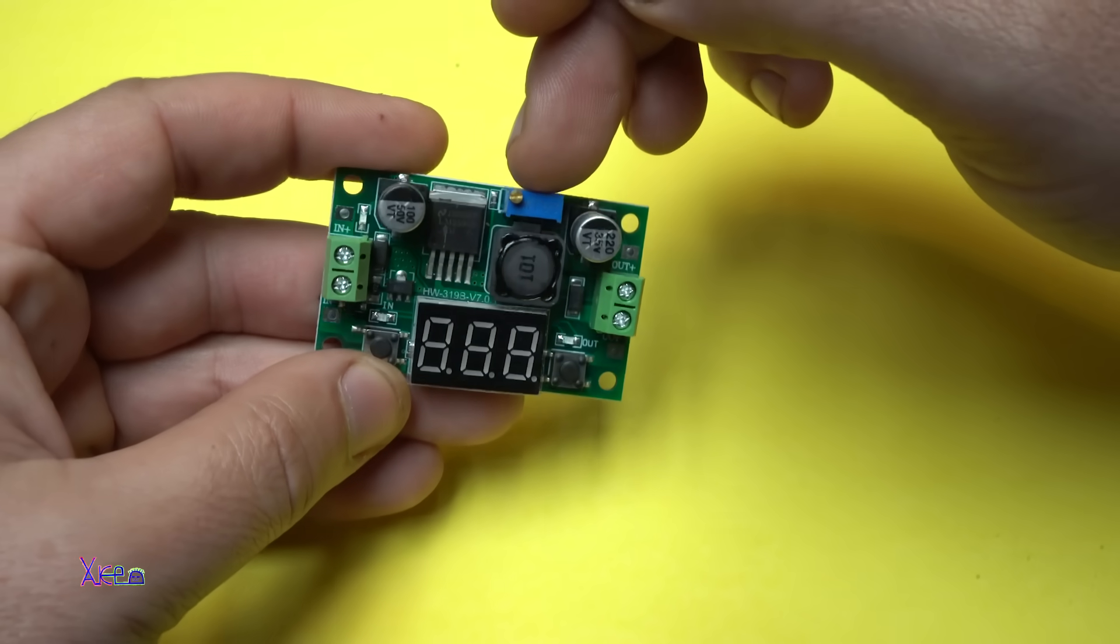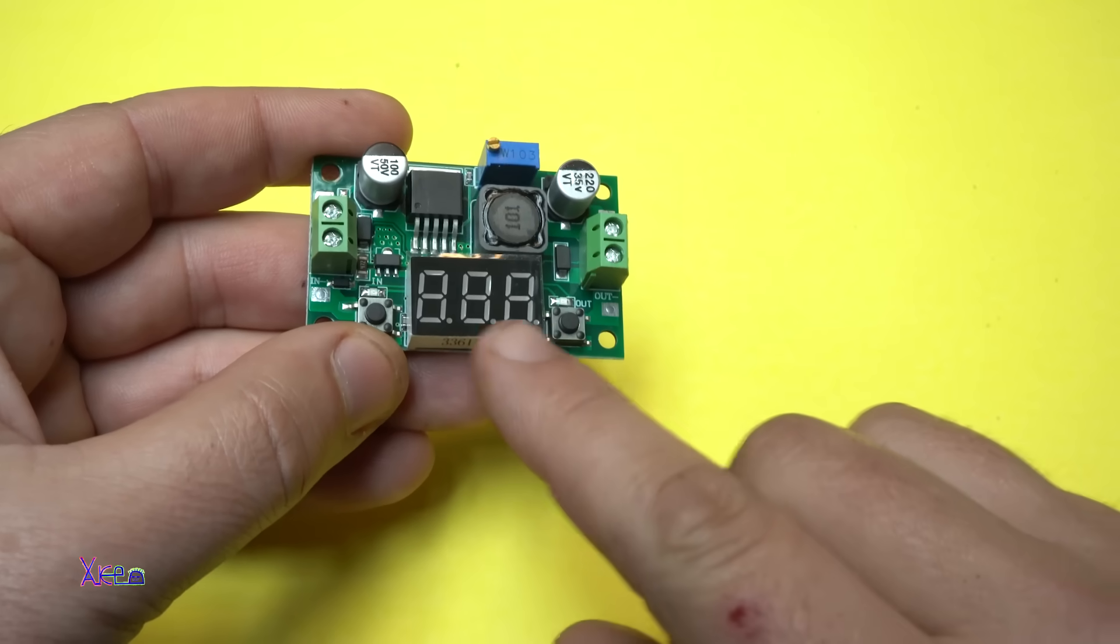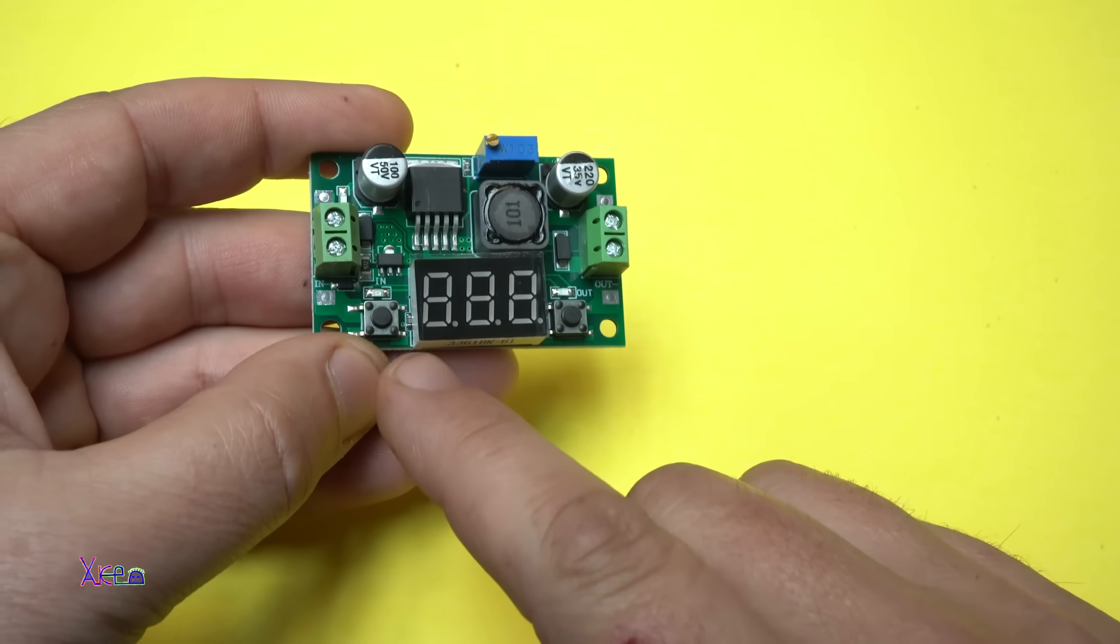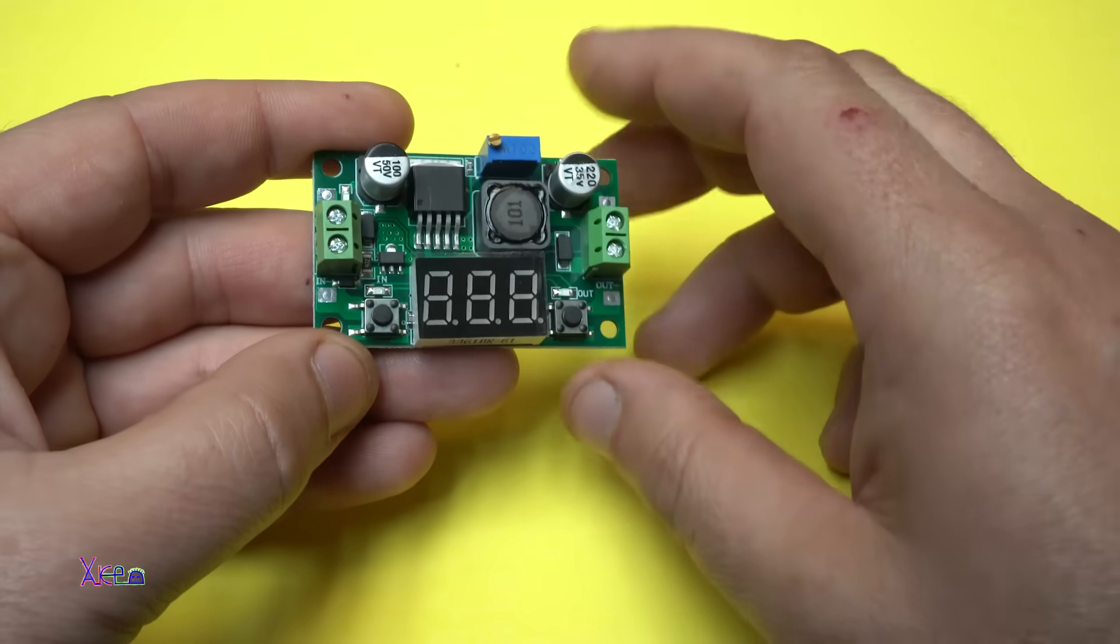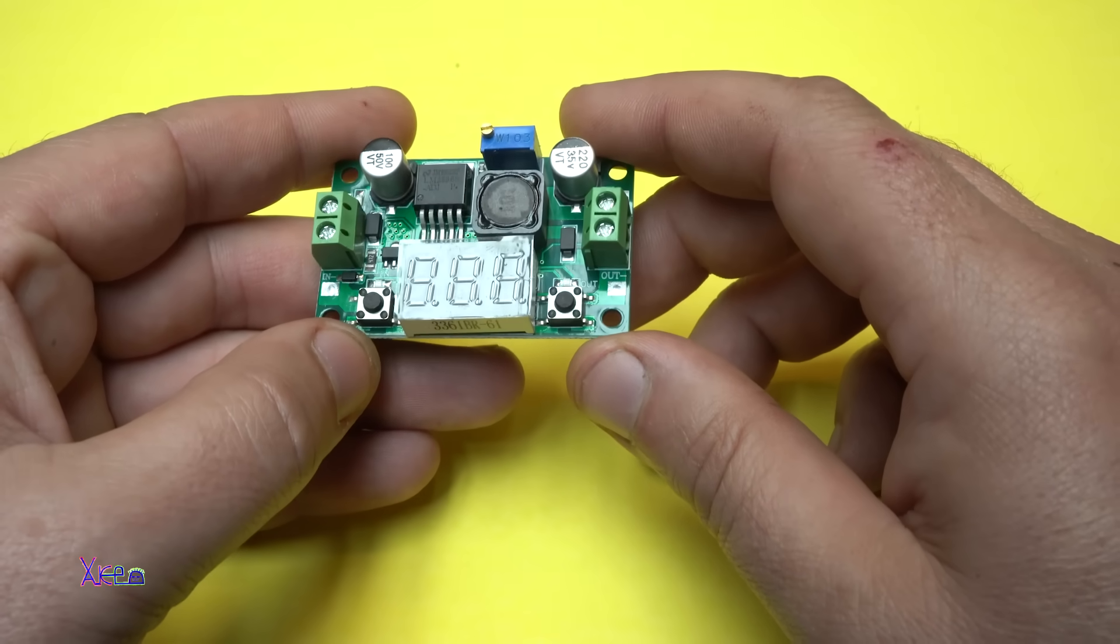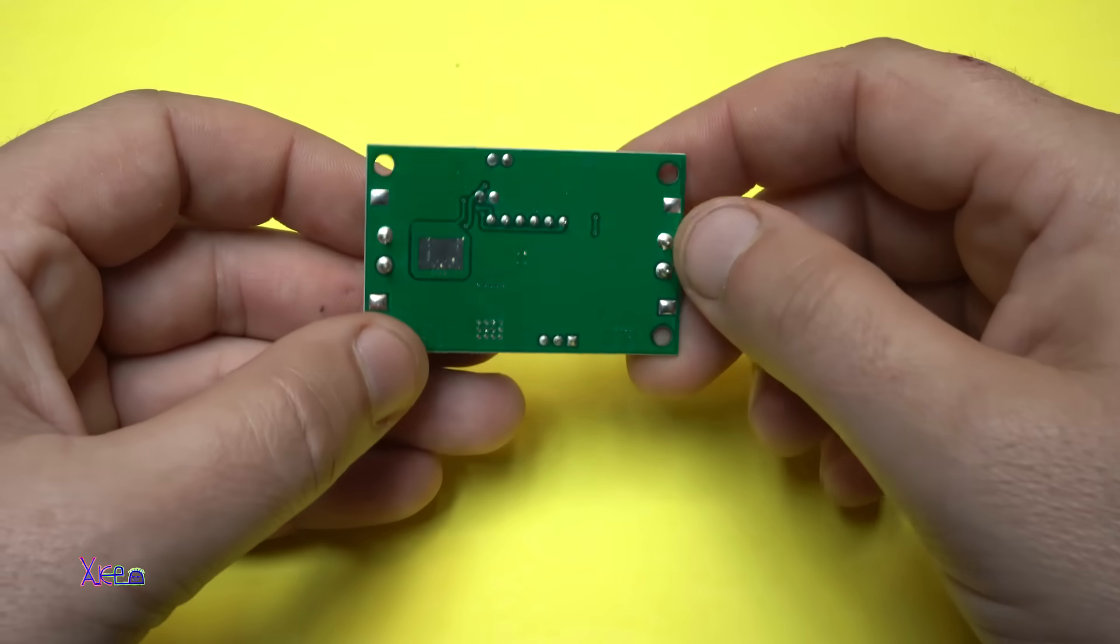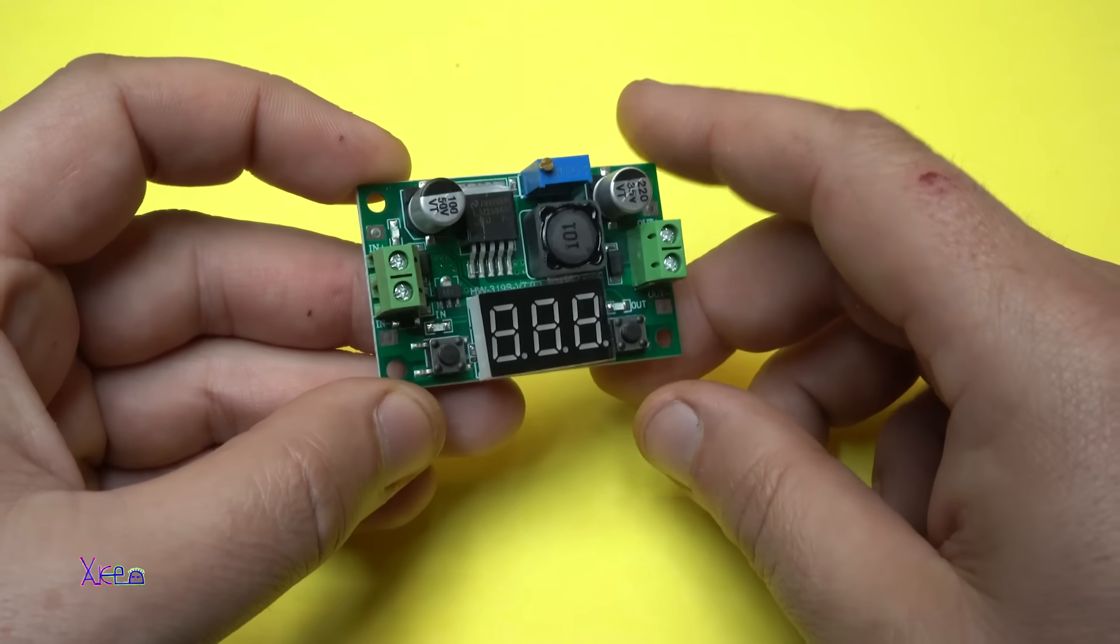You can adjust using this blue thing called a multi-turn potentiometer. Also, we have an LED voltmeter with two buttons and two LEDs that will indicate input or output voltage. Using those buttons, you're going to see the input or the output voltage on the display. By the way, this printed circuit board looks awesome.